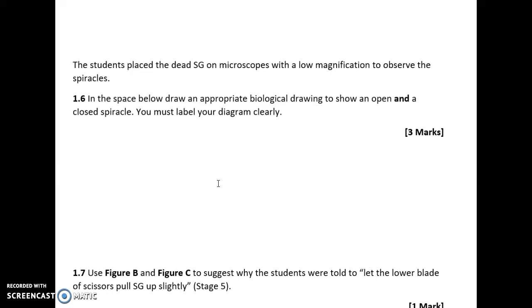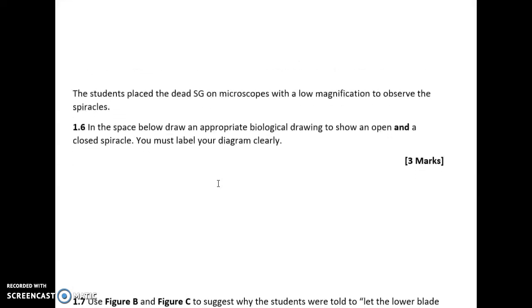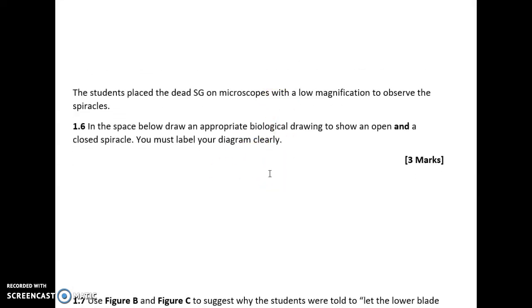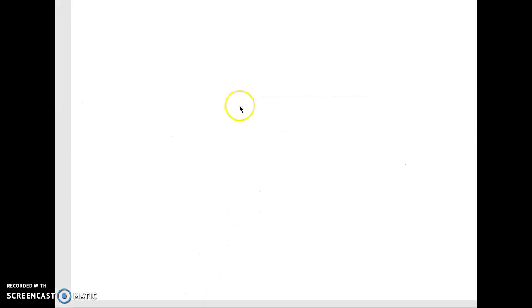The next question says that the students placed dead SG on microscopes with low magnification to observe the spiracles. In the space below, draw an appropriate biological drawing to show an open and a closed spiracle. You must label your diagram clearly.